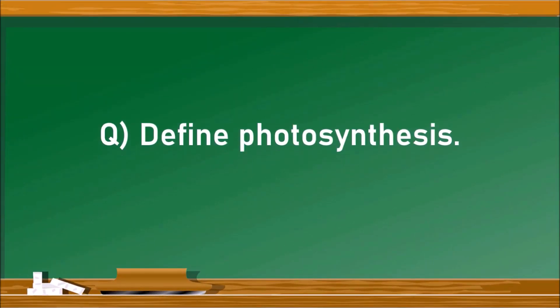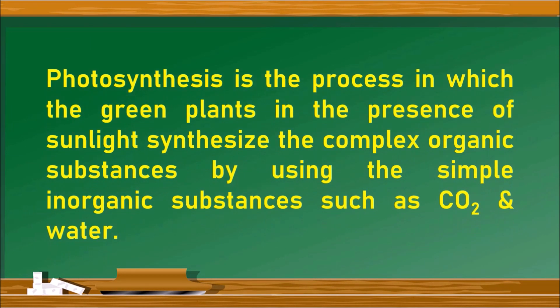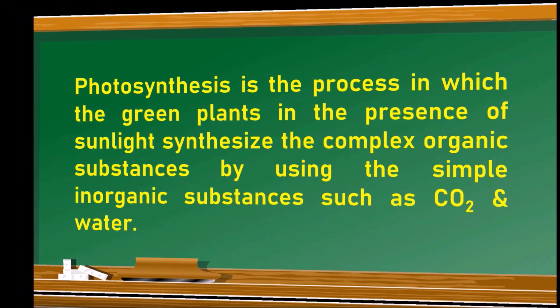The next question is: define photosynthesis. Photosynthesis is the process in which green plants, in the presence of sunlight, synthesize complex organic substances by using simple inorganic substances such as carbon dioxide and water.